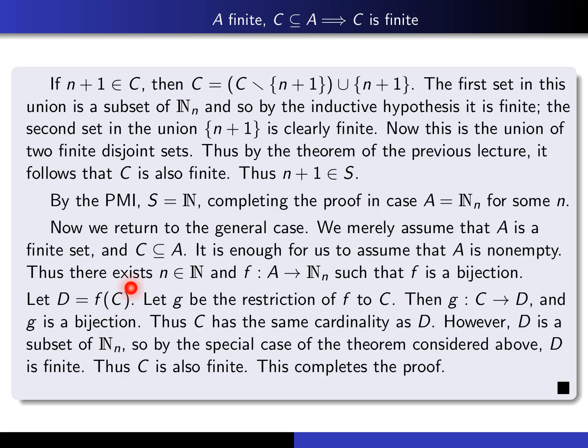What we do is take the image of C under F — call that D. D is a subset of N_N, so by the case we just proved, D is finite. Now, why do D and C have exactly the same cardinality? If we let G be the restriction of F down to C, we know that the restriction of any injection is always an injection. And by definition, the image G of C equals F of C, which is D, so G is also surjective. Therefore G is a bijection from C to D. So C and D have the same cardinality, and since D is finite, C is finite. That completes the proof.